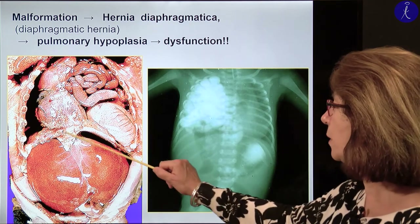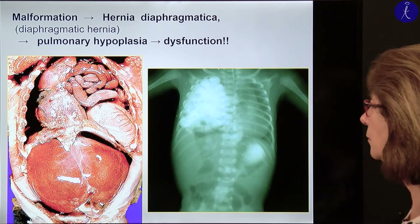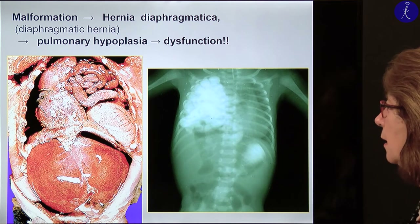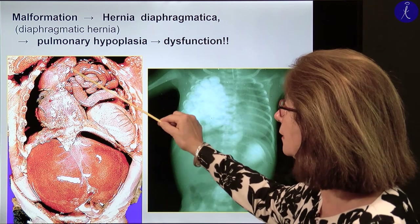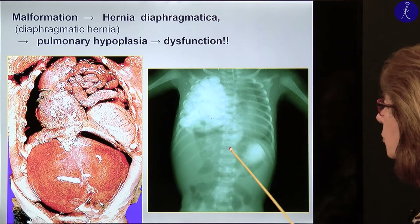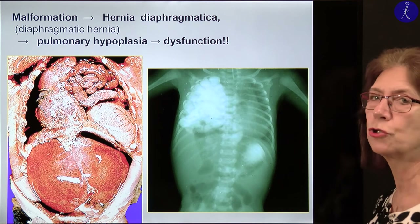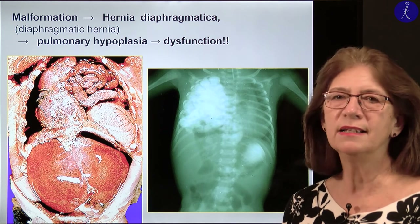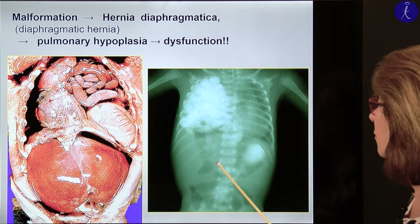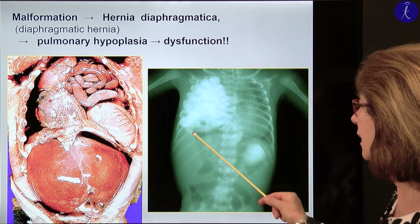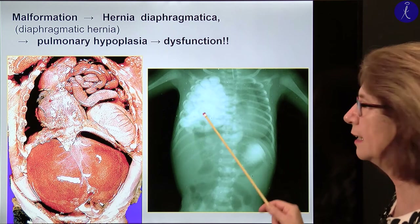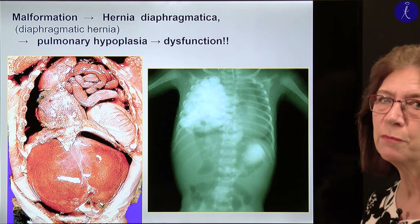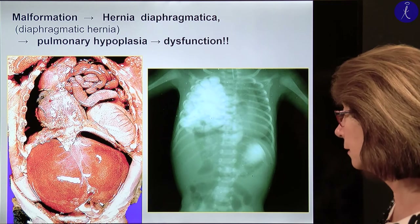Here you see a malformation of the same problem: the bowels and stomach are in the thoracic cavity, and here you see a small lung. On the other picture, that's an X-ray picture from our university — it's at least 30 years old. In this case the hernia happened on the right side, which is the exception. The end effect is the same: the baby didn't survive because it didn't have a lung.